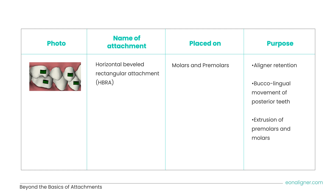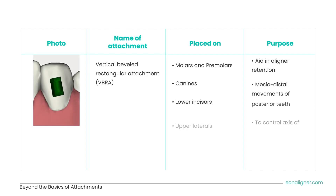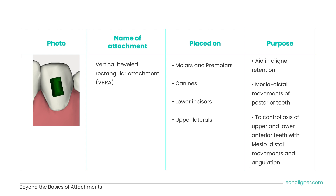Beveled attachments resolved this issue and facilitate insertion and removal of the aligners. Next is the vertical beveled rectangular attachment. Vertical attachments come with two active surfaces that enable root control movements while moving teeth in mesiodistal directions. They can be placed on molars, premolars, canines, lower incisors, and upper laterals. Vertical beveled rectangular attachments also play a role in aligner retention, mesiodistal movements of posterior teeth, and controlling the axis of upper and lower anterior teeth with angulations.